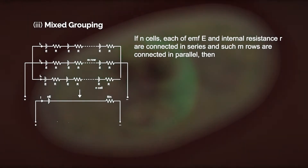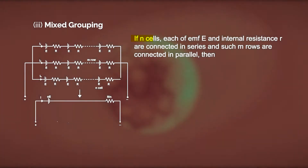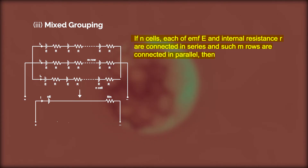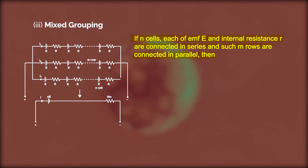When we mix a parallel circuit and a series circuit together, that grouping is called mixed grouping. In this case, if there are N cells, each of EMF E and internal resistance r, connected in series, and such M rows are connected in parallel — N cells are connected in series and M such rows are connected in parallel.